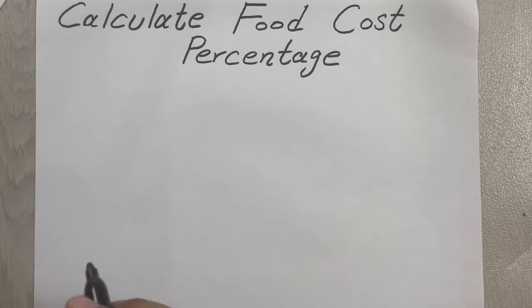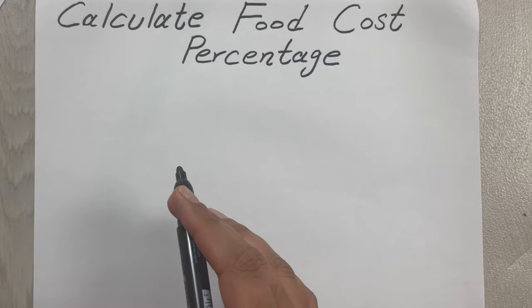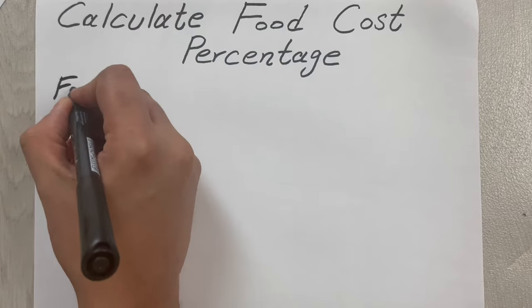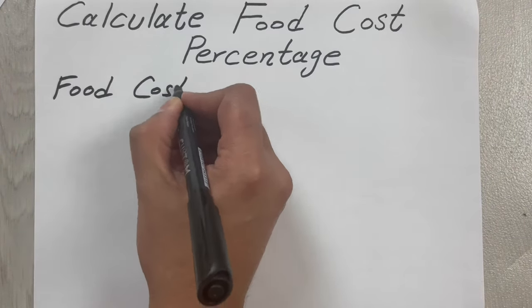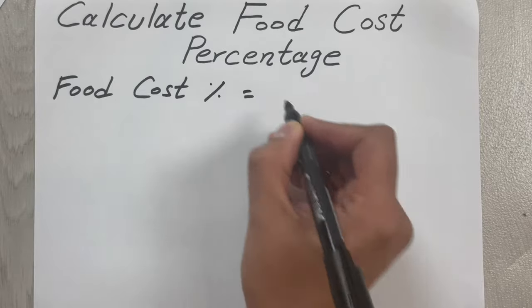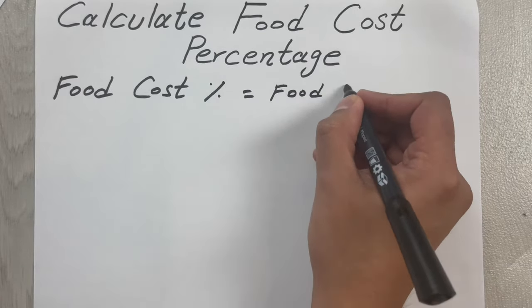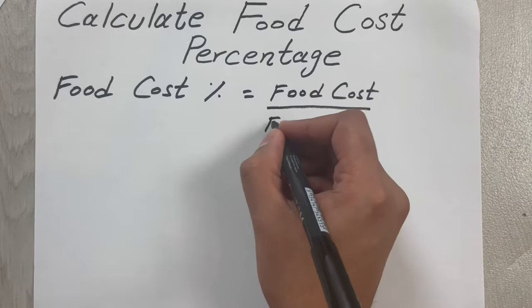Hello guys, I hope you are doing really well. In today's video I will show you how to calculate the food cost percentage. The formula for food cost percentage is: food cost percentage equals food cost divided by food sales, multiplied by 100.